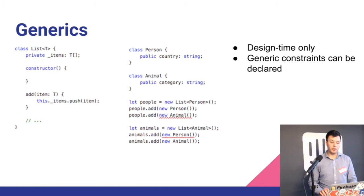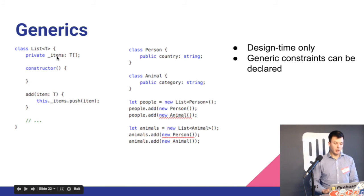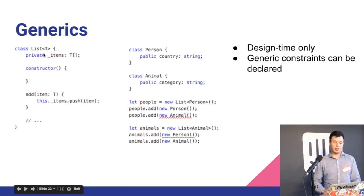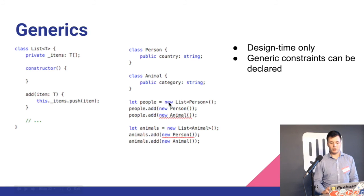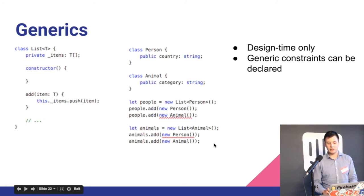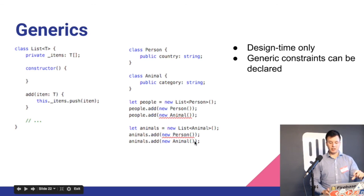Another feature is generics. Because we have types, we also have generic types. You can define a List without knowing the type at definition time — you define the type when you actually consume the class. So in one case it's a list of Person, in another it's a list of Animal. It's basically the same class, but without casting, and it prevents errors.